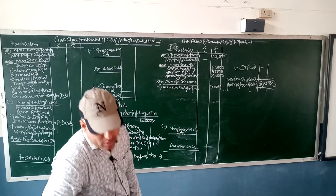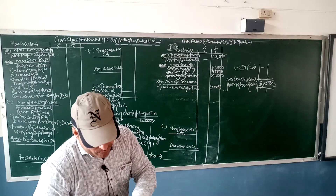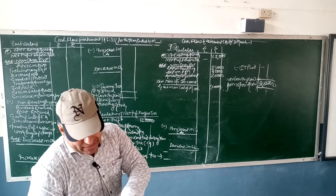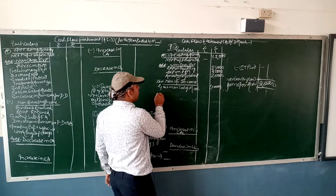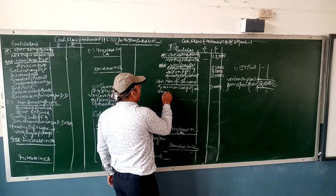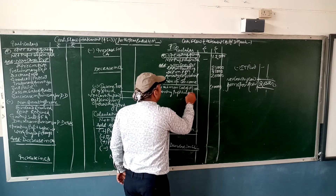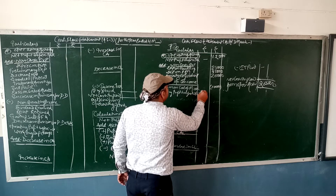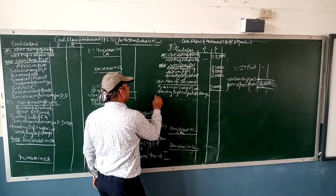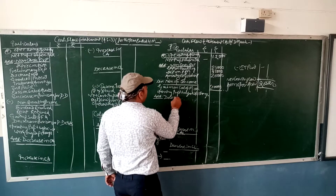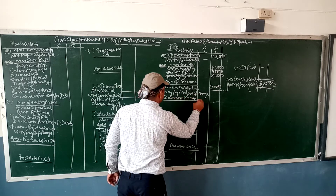Now let's talk about trade receivables. We need to look at current assets and current liabilities for last year and this year. Trade receivables: 35 to 45 — trade receivables have increased. Next column is operating profit before working capital changes.